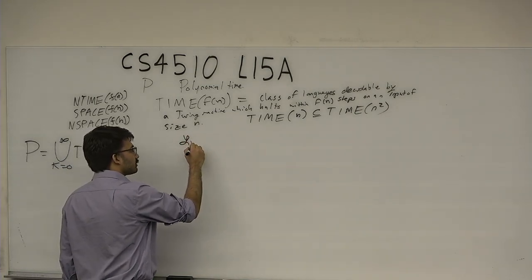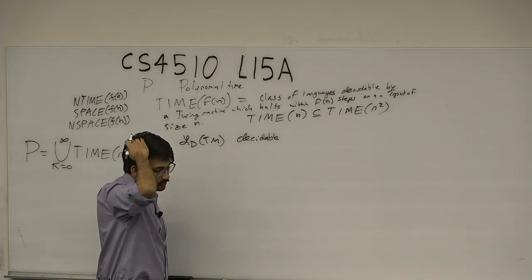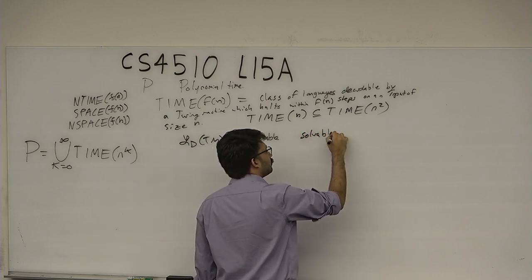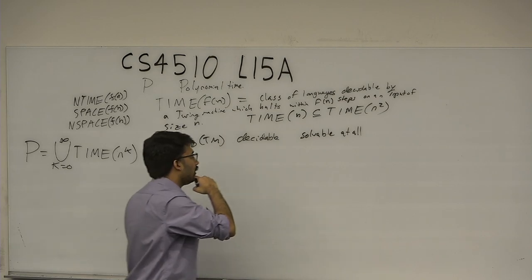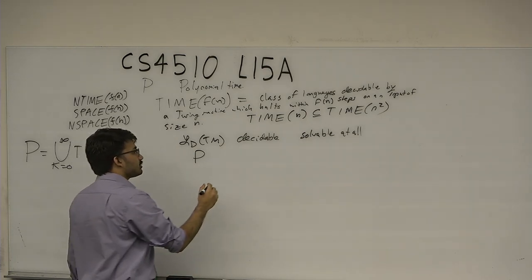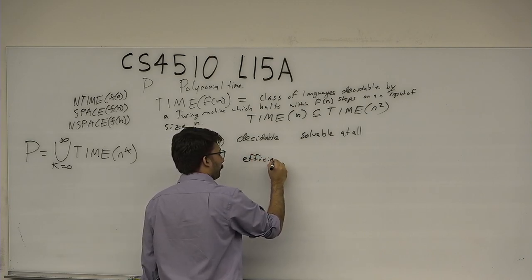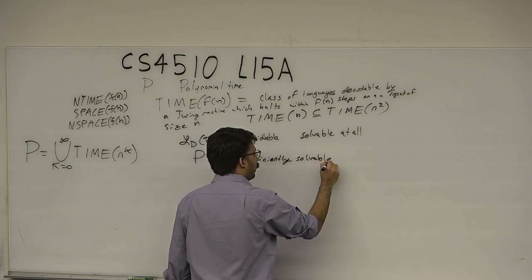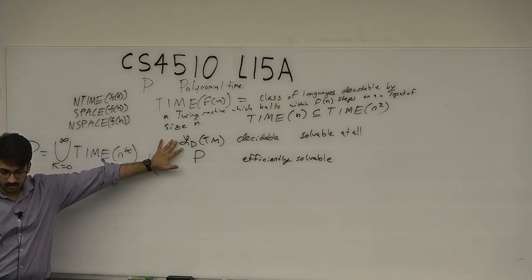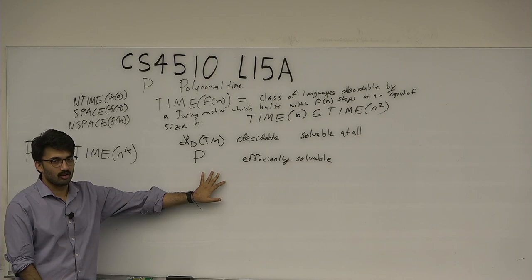For computability theory, we talked about the decidable languages — the class of problems solvable at all. P, I claim, is efficiently solvable. While these are abstract mathematical definitions, the definition of the decidable languages covers those solvable at all. P is the class of languages we would like to think are efficiently solvable.